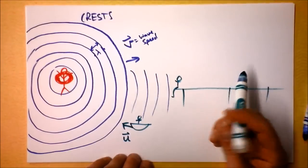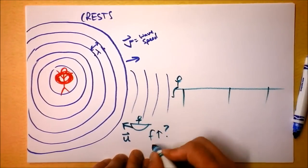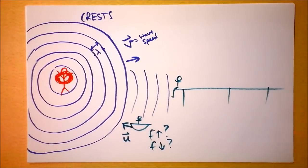U, velocity, towards. Then would frequency go up or down? Frequency up, frequency down. You answer that question yourself.